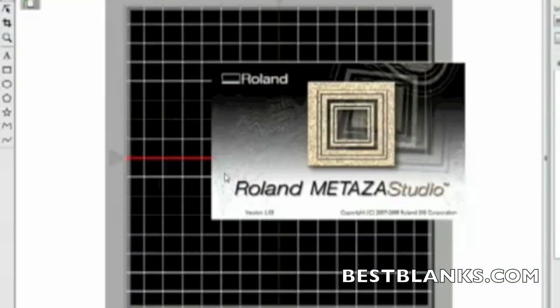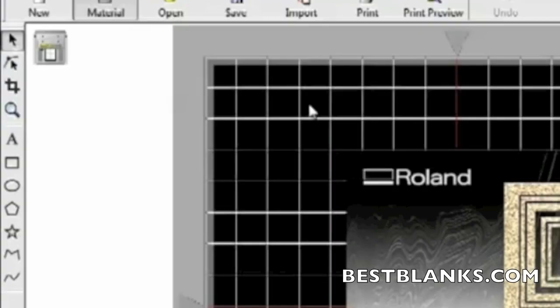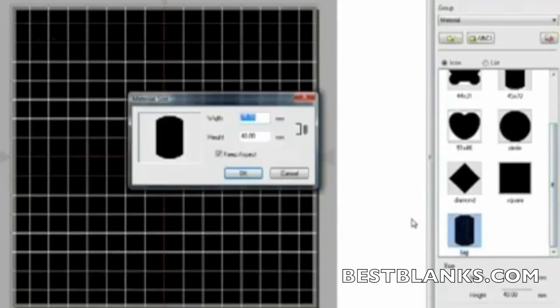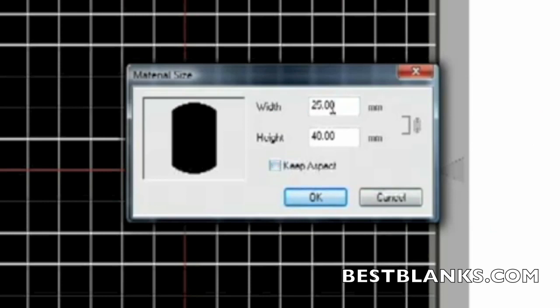We'll be creating the design with Roland Medeza Studio software, which comes bundled with your MPX printer. First, you'll set up the printable area by selecting add material and downloading the templates for use with your material. You can adjust it to the width and height of your pendant and save this as a new template that you can easily use again later.